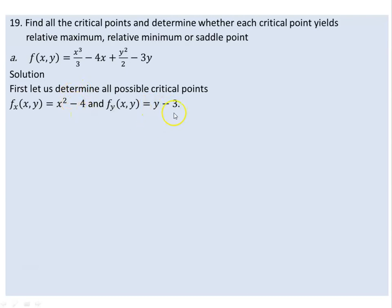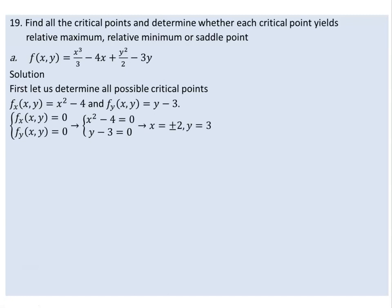The polynomial equals 2 and equals 4. If we set x squared minus 4 equal to 0, we get our critical point values.